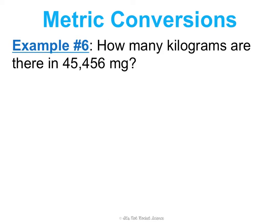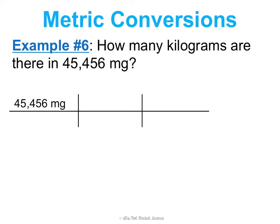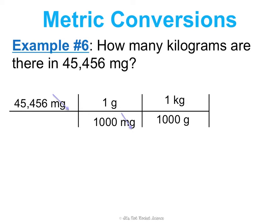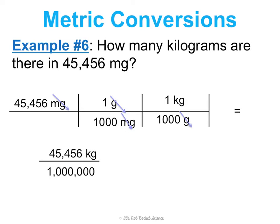Let's try another: how many kilograms are there in 45,456 milligrams? Write the given: 45,456 milligrams. Draw the picket fence. There's no direct milli-to-kilo conversion factor, so use two steps: 1,000 milligrams per 1 gram (milligrams cancel), then 1,000 grams per 1 kilogram (grams cancel), leaving only kilograms. Multiply across the top and bottom: 1,000 times 1,000 is 1,000,000. Divide 45,456 by 1,000,000 to get 0.045456 kilograms.